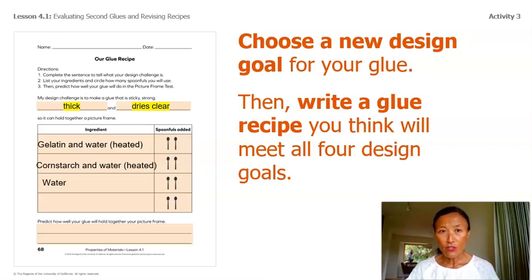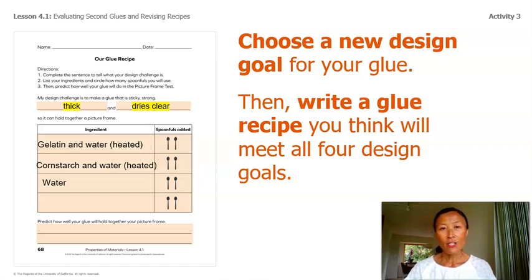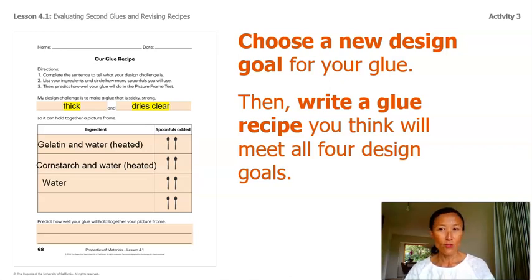Let's look at the instructions. It says: complete the sentence to tell what your design challenge is, then list your ingredients and circle how many spoonfuls you will use, then predict how well your glue will do in the picture frame test. My design challenge is to make a glue that is sticky, strong, thick, and dries clear. The ingredients I came up with are: gelatin and water that are heated — maybe two spoonfuls of that; cornstarch and water also heated — two of that as well; and then water mixed in just to get the right consistency.